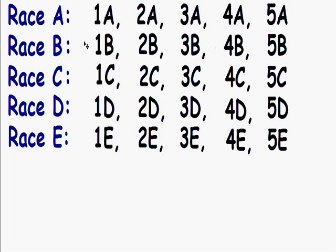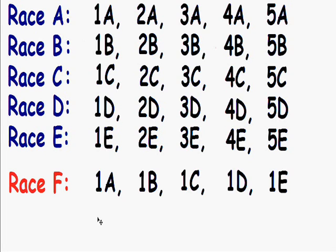At this point we've already used 5 out of the 7 races. The question is: who do we pick to run in the 6th race that will give us information about who the fastest 3 runners are? The people we're going to pick to run in the 6th race are all of the first place winners. I'm going to pick all of the first place winners because it's going to give us a lot of information about who the fastest 3 runners are and who are not.